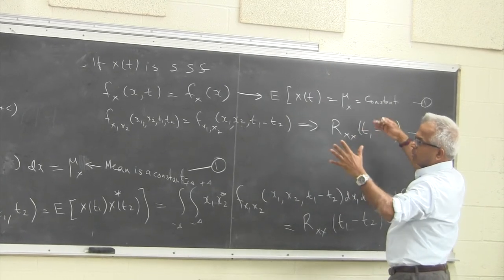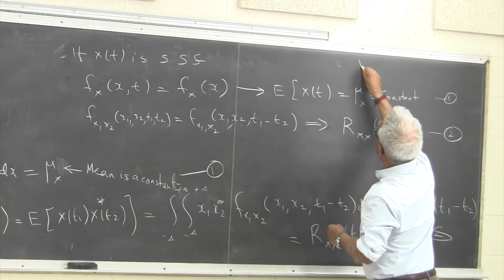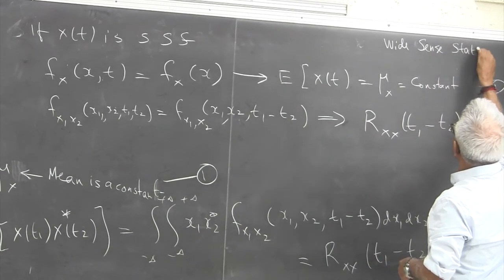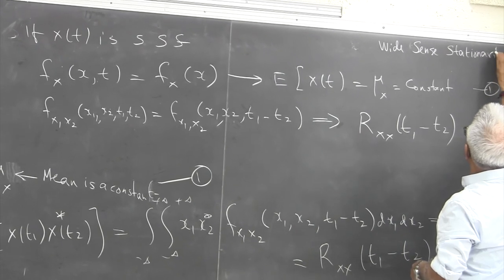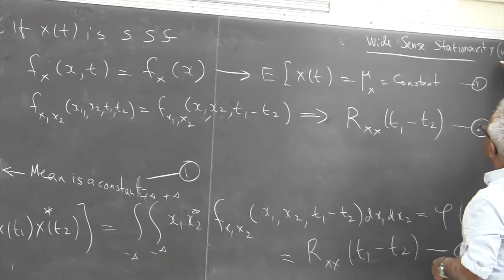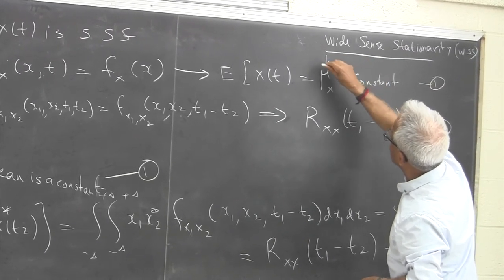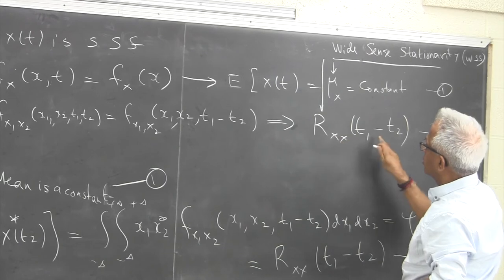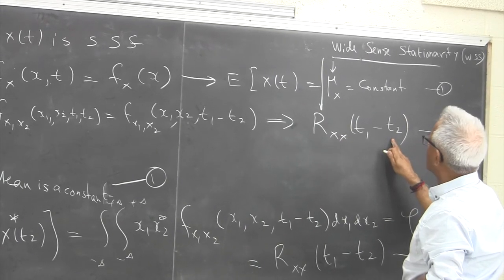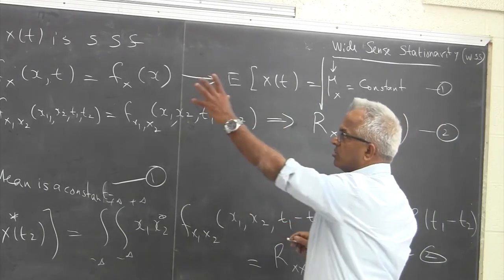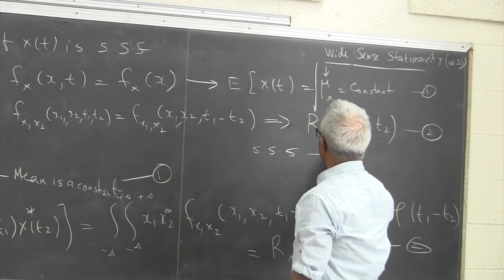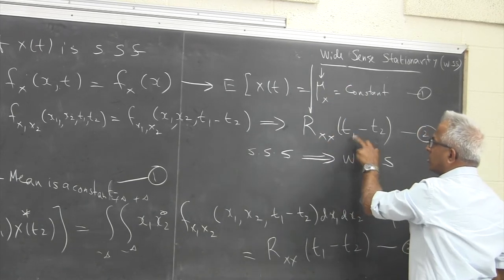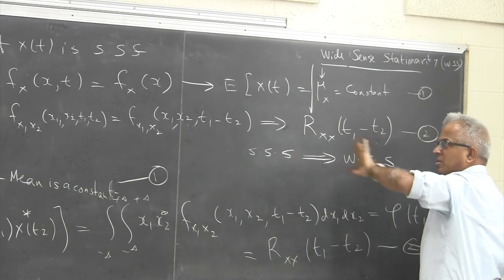What we can usually characterize — estimate one way or another — are the mean and autocorrelation functions. So even though strict sense stationarity is nice, it may be impractical to verify whether the density function is a function of t1 minus t2. So we have a looser definition called wide-sense stationarity, based on these two properties. A wide-sense stationary process uses these two properties: the mean is a constant, and the autocorrelation function depends only on t1 minus t2.